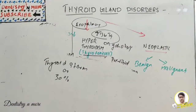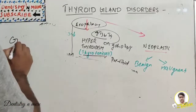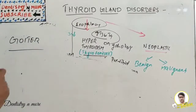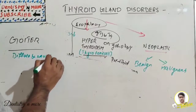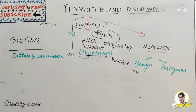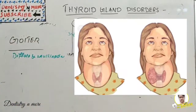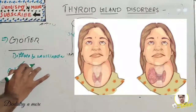Now we have goiter — a diffuse and multinodular enlargement of the thyroid. It is the most common manifestation of thyroid disease, most often caused by dietary iodine deficiency, leading to impaired synthesis of thyroid hormone. There are two types: endemic and sporadic.